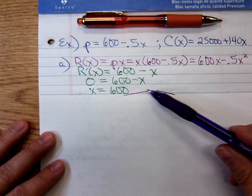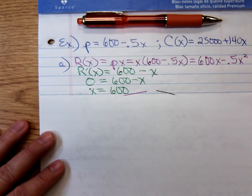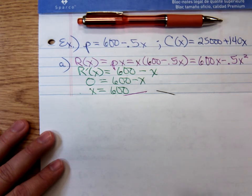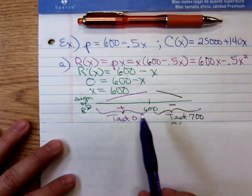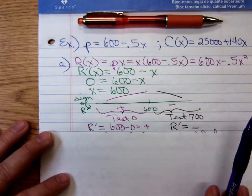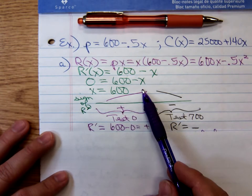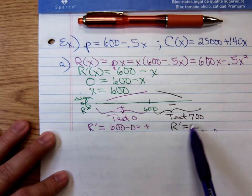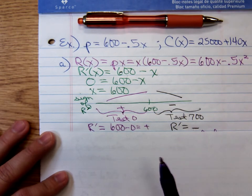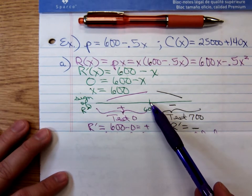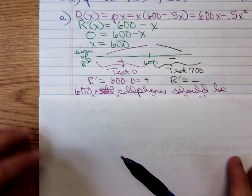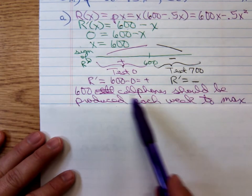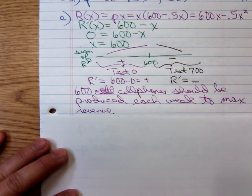But since we only have a single critical number, we need to show that that's a local maximum. If it's a local maximum, then it's necessarily the absolute maximum. So draw your number line. We're testing 600, just like we've been doing since we started the first derivative test. And to the right, the derivative is positive, so increasing. To the left, the derivative is negative. So certainly we did have a local maximum. Hence, an absolute maximum.